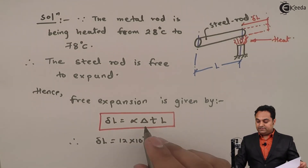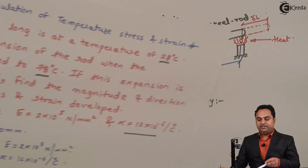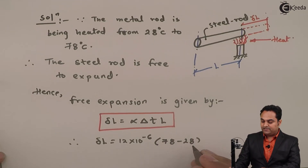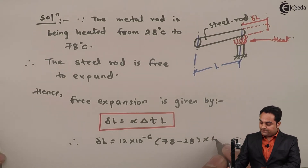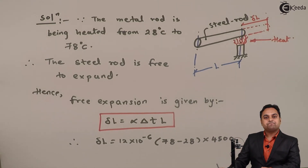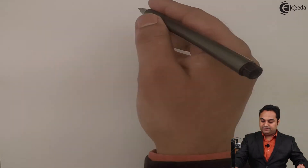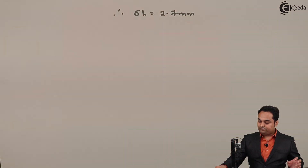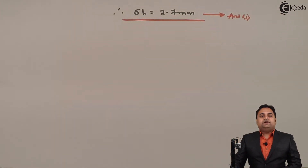Delta T is the temperature change: 78 minus 28, that is final minus initial temperature. The length is 4500 mm. From this calculation, we get the first answer: free expansion delta L equals 2.7 mm.